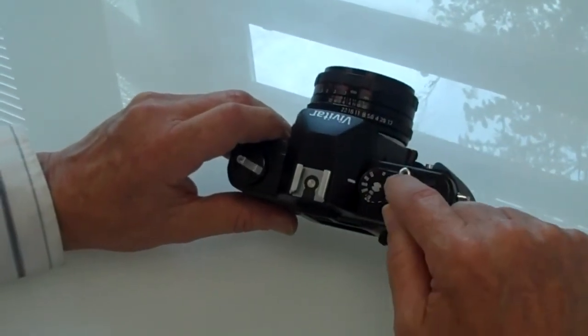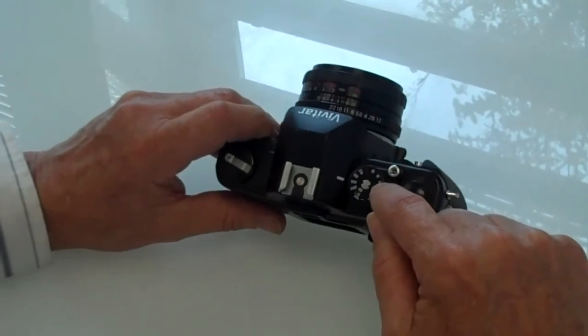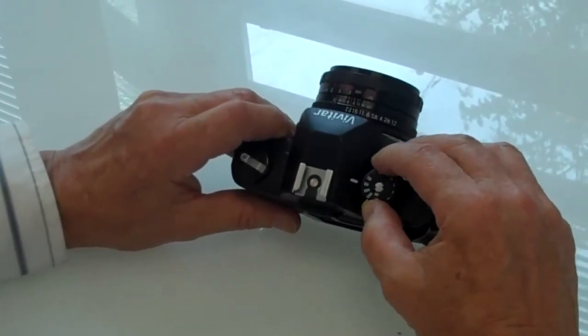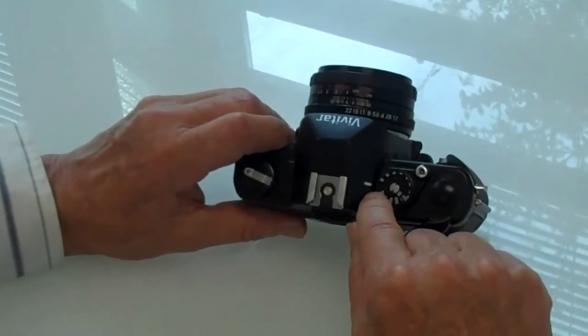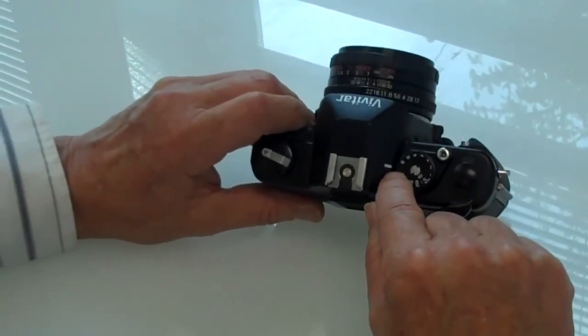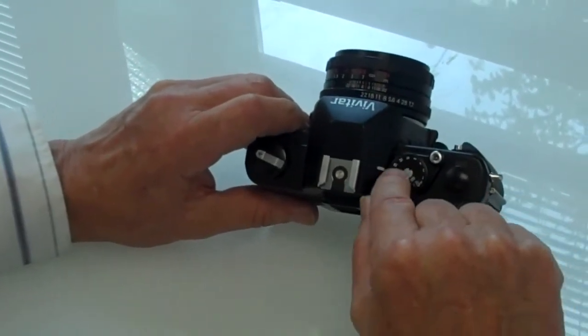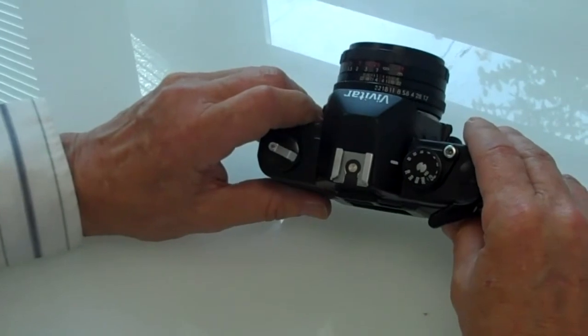Now this ring here indicates your shutter speed. For our purposes, we want to go to 125th and notice that most cameras will have it in red or orange. So this is a good shutter speed for general outdoor photography.